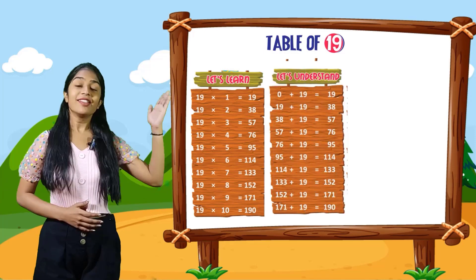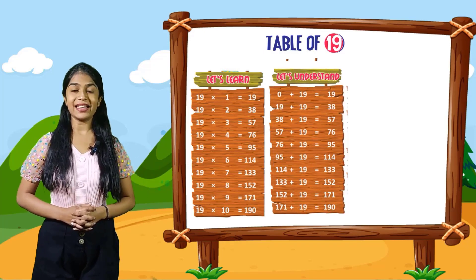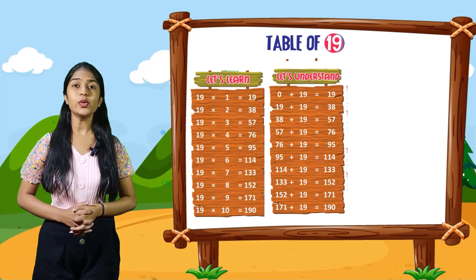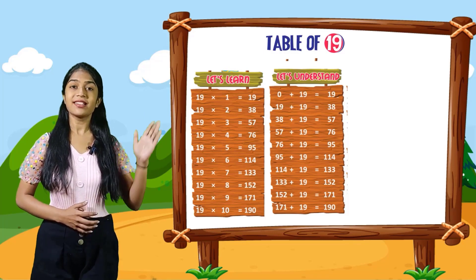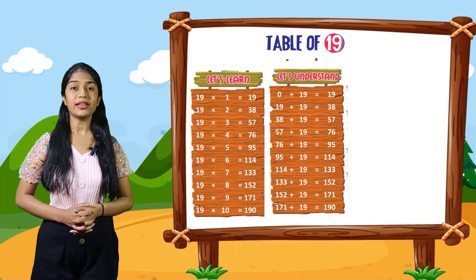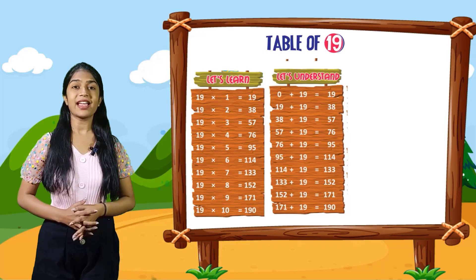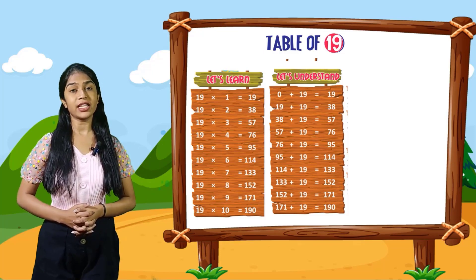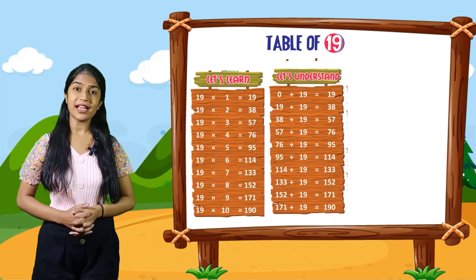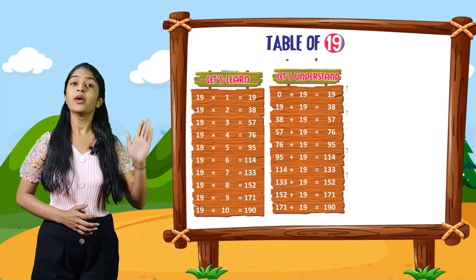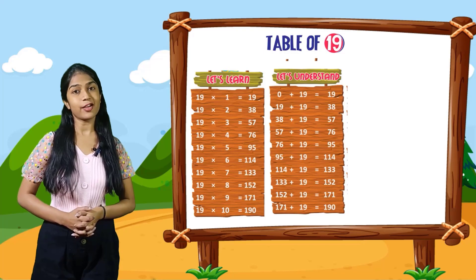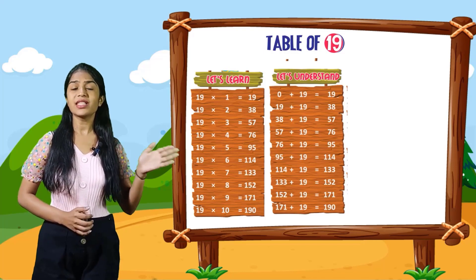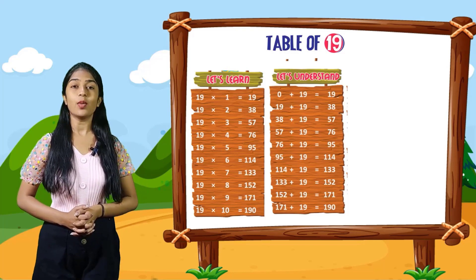So now let's understand. 0 plus 19 is equal to 19. 19 plus 19 is equal to 38. 38 plus 19 is equal to 57. 57 plus 19 is equal to 76. 76 plus 19 is equal to 95. 95 plus 19 is equal to 114. 152 plus 19 is equal to 171. 171 plus 19 is equal to 190.